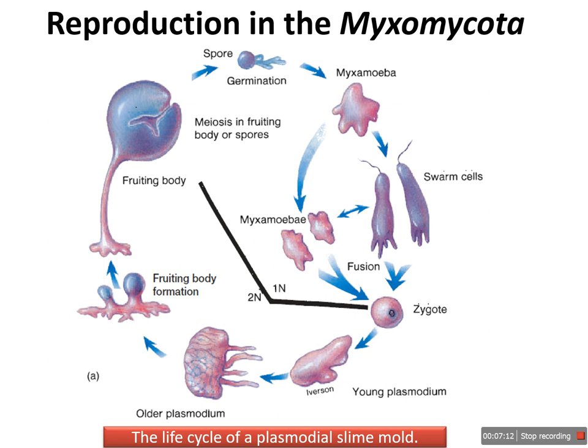When unfavorable conditions prevail for a longer period, the plasmodium forms a protective brittle layer and becomes dormant. This dormant stage is called the sclerotium, which under the microscope can be observed to be composed of a number of small multinucleated cells called macrocysts. Upon return of favorable conditions, each macrocyst can give rise to a new plasmodium.